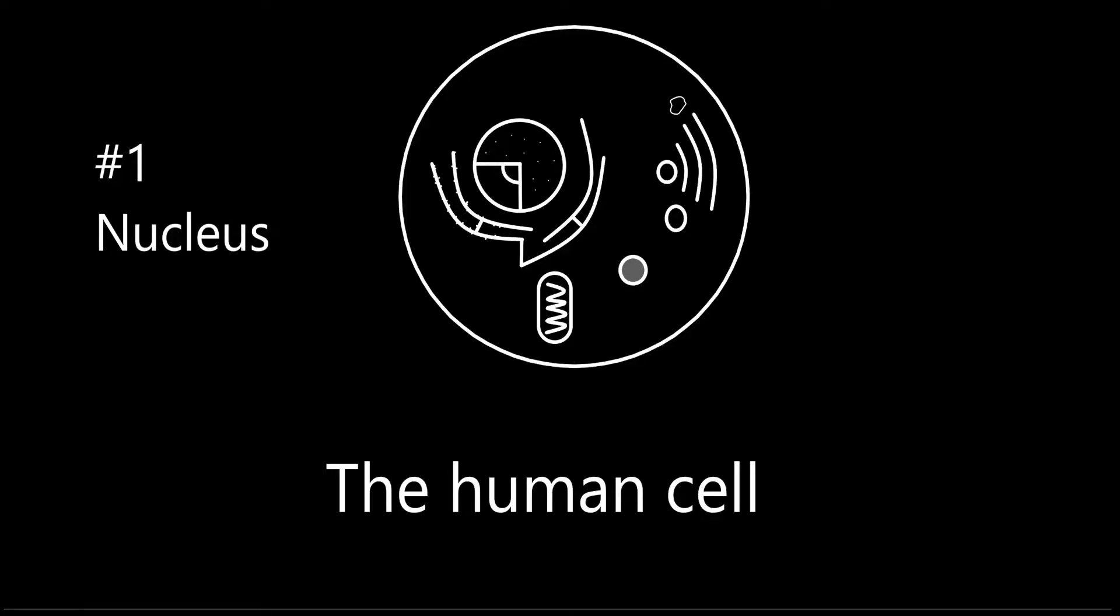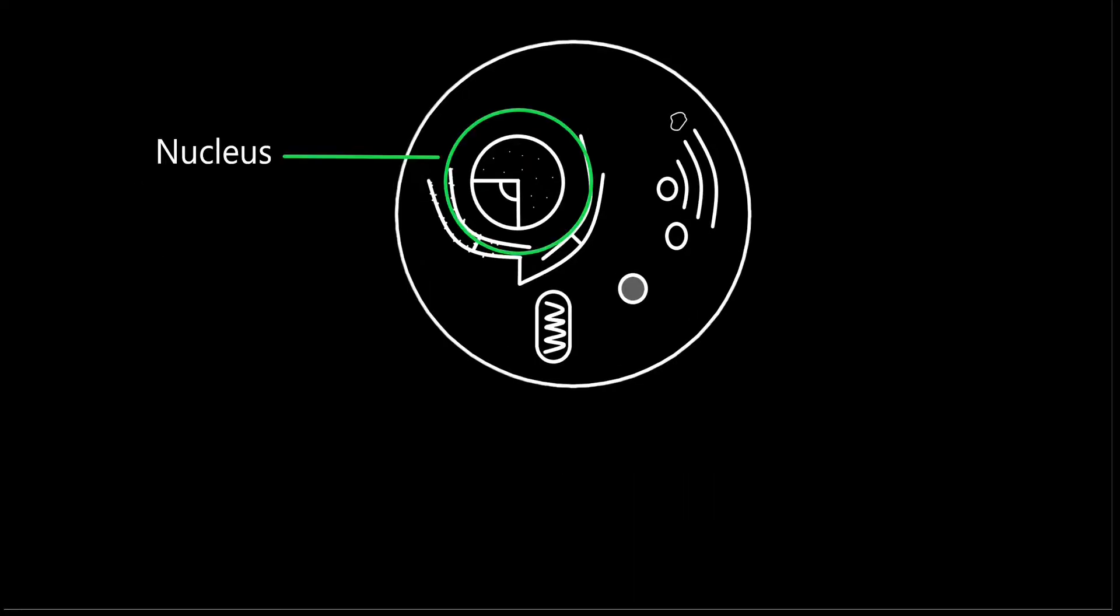Hello guys and welcome to our first episode of our journey through the human cell. Today we're going to be talking about the nucleus, which is located in the green encircled area.